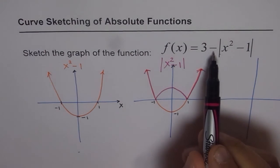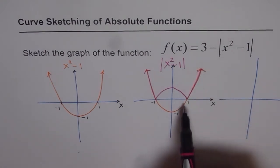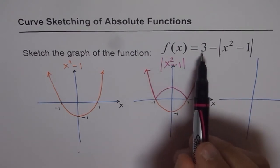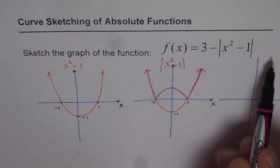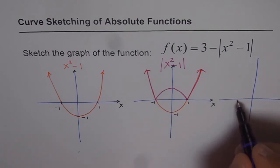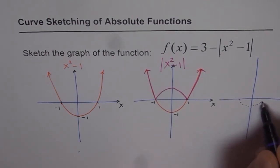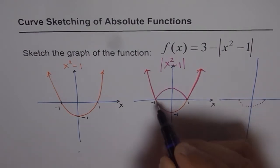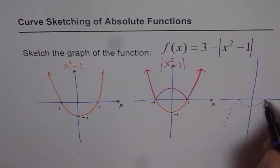Now the next one is reflection. Minus indicates reflection. So we need to reflect this graph and 3 indicates translating 3 units up. So that is the final stage where we are going to do translation and reflection. So if you reflect it, it kind of becomes like this. So that is the kind of reflection and these sides will be coming down. That is the reflection.